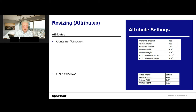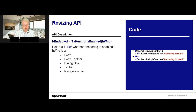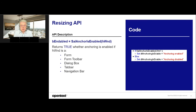Let's look into the next API function. First we need to find out for a form, form toolbar, dialog box, tab bar, or navigation bar, if anchoring is really enabled. We can query that by using cell anchor is enabled, passing in the handle for a special form window, form bar, form toolbar, dialog box, tab bar, or navigation bar. We get back a boolean — true if anchoring is enabled, false if disabled. If it is enabled, we can use additional API functions, for example to enable proportional resizing or other functions of the anchoring toolset.